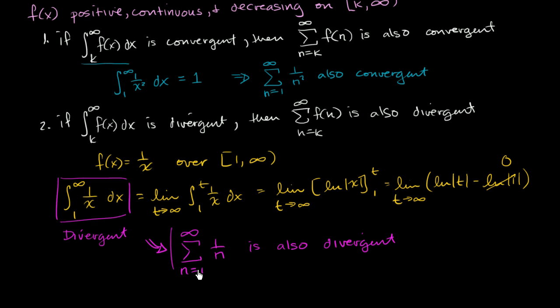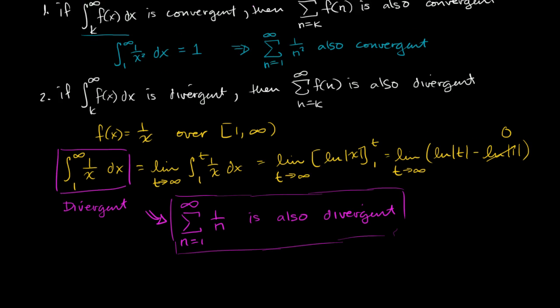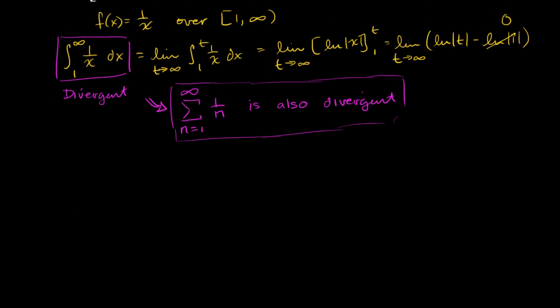So we've already shown that the harmonic series is divergent using that very beautiful, elegant proof by Orem — I'm probably mispronouncing his name — that used the comparison test. But just like this, we have used the integral test to show that it is also divergent. Let's remember what the whole motivation of the integral test is.